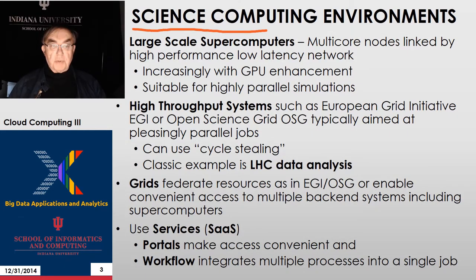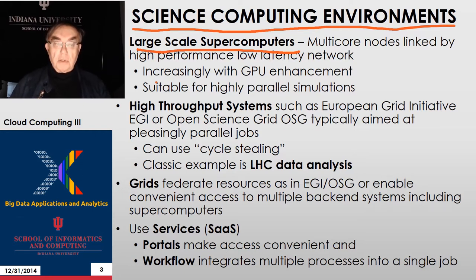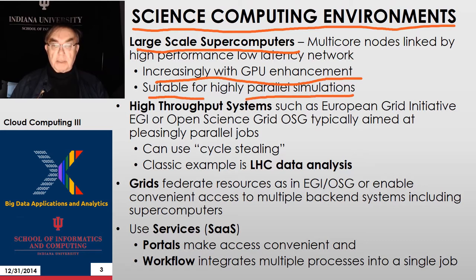Let's look at how scientific computing is done. A large amount of science is done on supercomputers. These are very big. They have multi-core nodes linked by high performance, low latency networks, maybe up to a million cores. And increasingly, these have GPU enhancements to get very high performance on each node. They're designed to be highly suitable for parallel simulations — calculating combustion, fusion, climate, astrophysics, beginning of the universe, and so on.